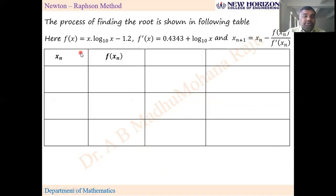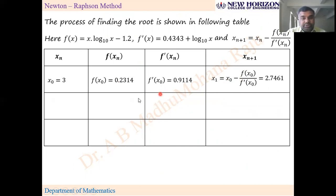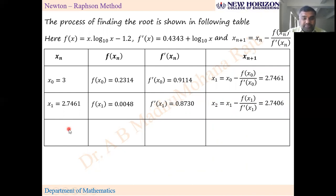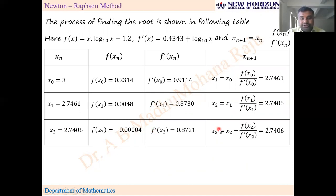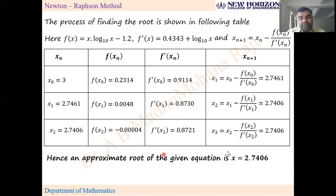List out f(x), f'(x), and the formula for xₙ₊₁ in tabular form. Columns: xₙ, f(xₙ), f'(xₙ), xₙ₊₁. Start with x₀ = 3, compute f(x₀) and f'(x₀) to get x₁. Then use x₁ to get x₂. When x₂ and x₃ are both the same, the approximate root is x = 2.7406. You can proceed remaining problems similarly with this method. Thank you — we'll see the next topic in the next lecture video.